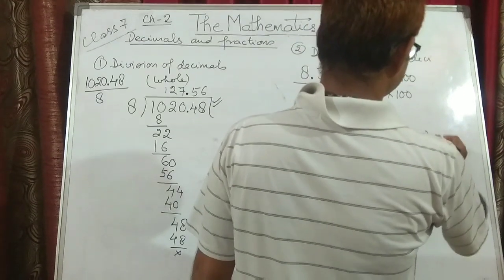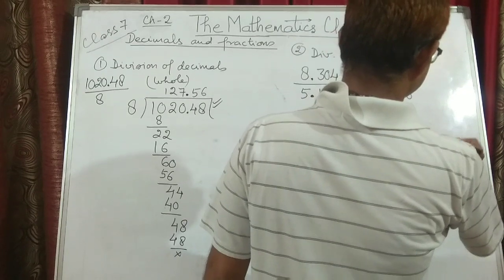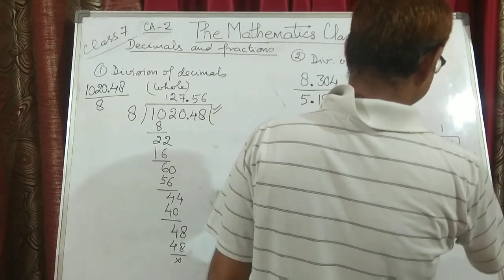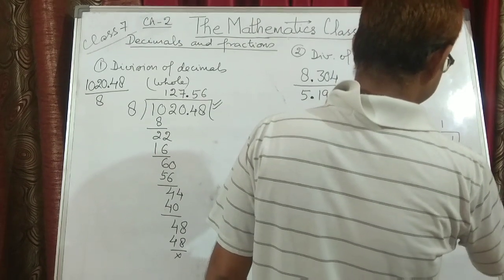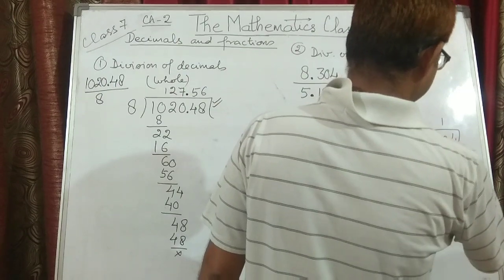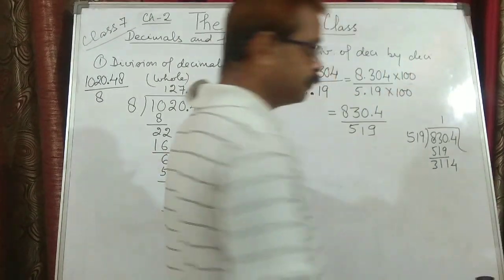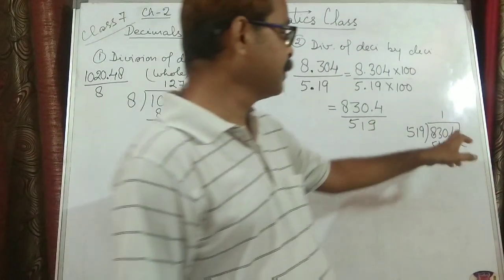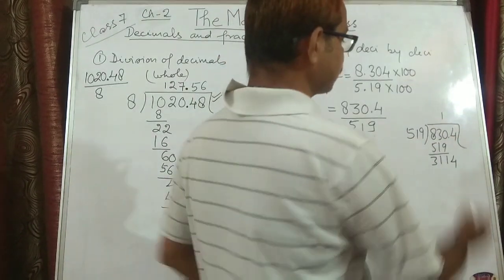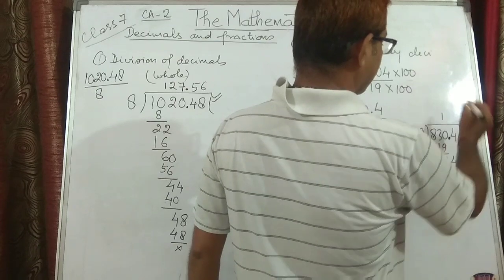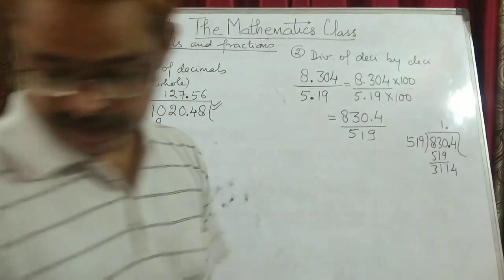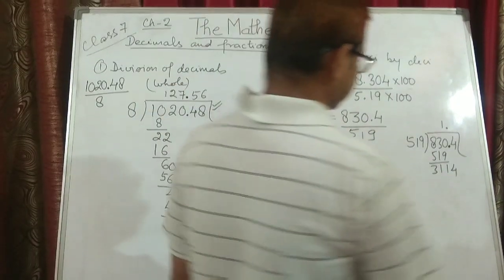519 into 830.4. So 1 times 519 is 519. 10 minus 9 is 1, 2 minus 1 is 1, and 8 minus 5 is 3 — remainder 311. We carry down 4. But 4 is after the decimal, so this decimal will be aligned with the quotient.